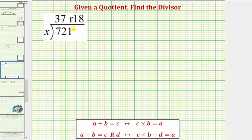To better understand how to approach this, let's first look at a quotient without a remainder. Looking at the notes below, a divided by b equals c, if and only if c times b equals a.